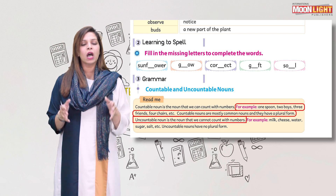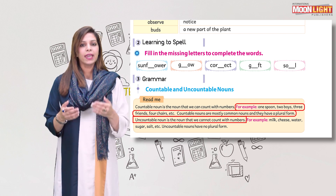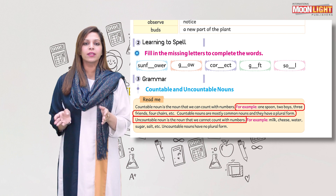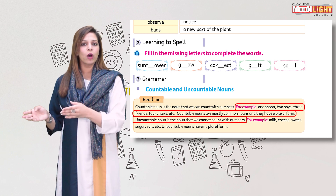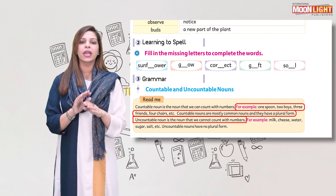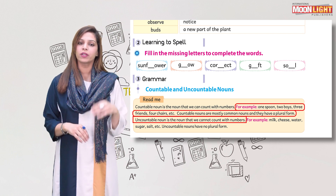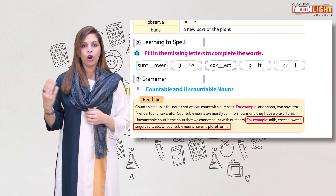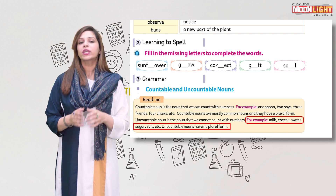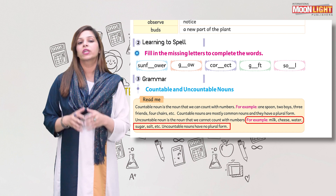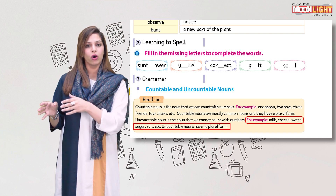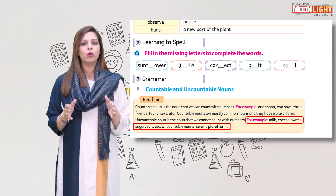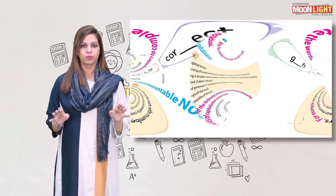Countable nouns are mostly common nouns and they have a singular and plural form. On the other hand, uncountable nouns are nouns which cannot be counted in numbers, like milk, cheese, and oil. We cannot count milk, we cannot count oil, we cannot count cheese. Uncountable nouns have no plural form.